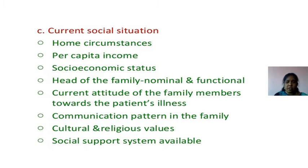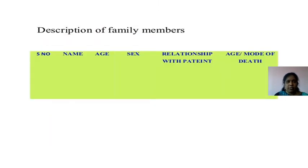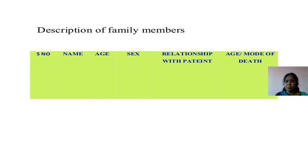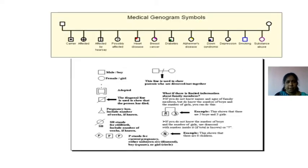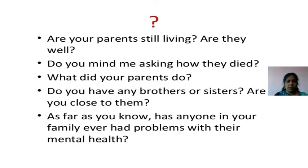How the patient communicates with family members, whether cultural or religious values are affected, and social support systems available. We record family members in a table format: serial number, name, age, sex, relation with the patient, and mode of death. Three generations should be drawn as a genogram. Questions to ask: Are the parents still alive? Are they well? How did they die? What did your parents do for work?